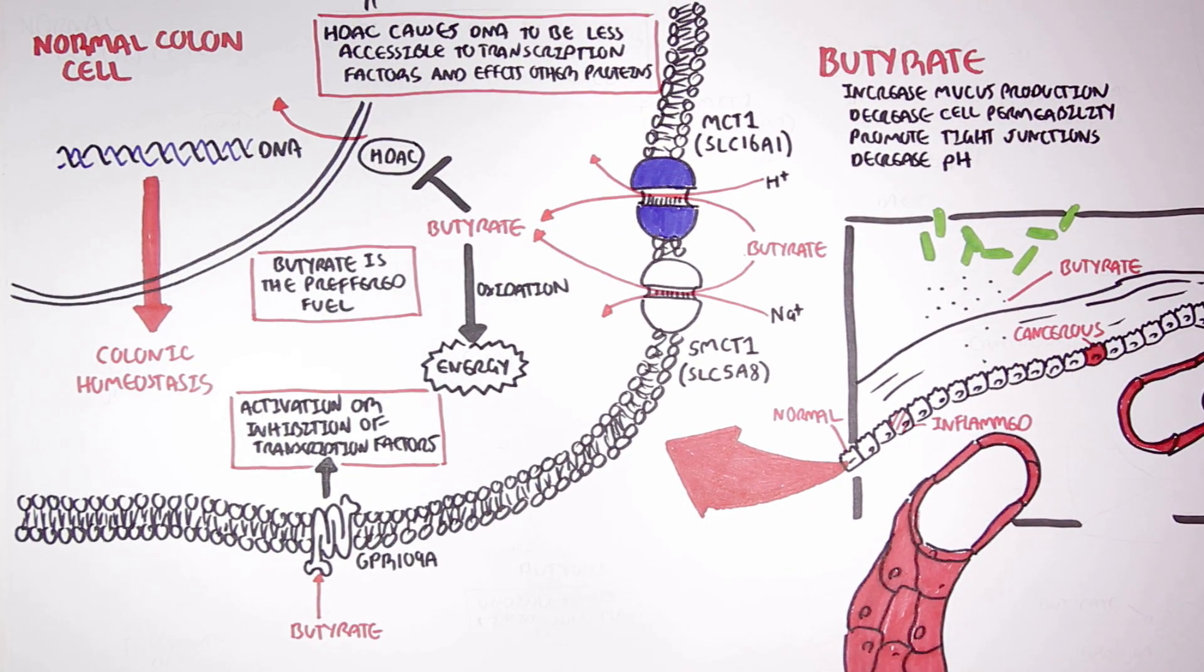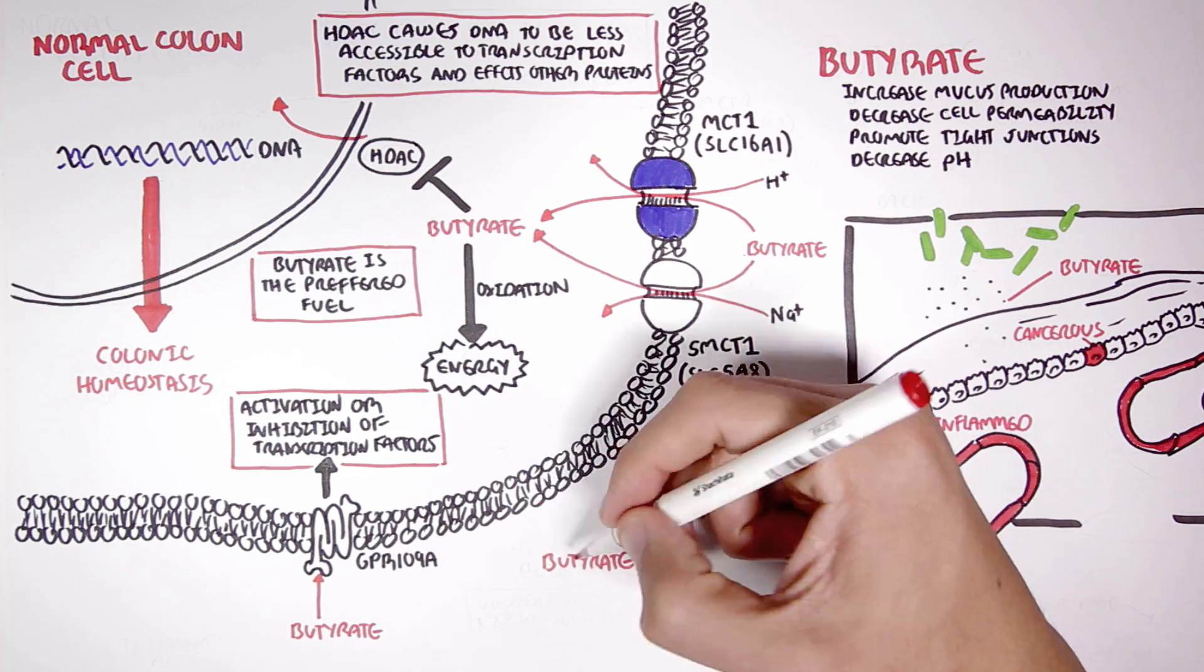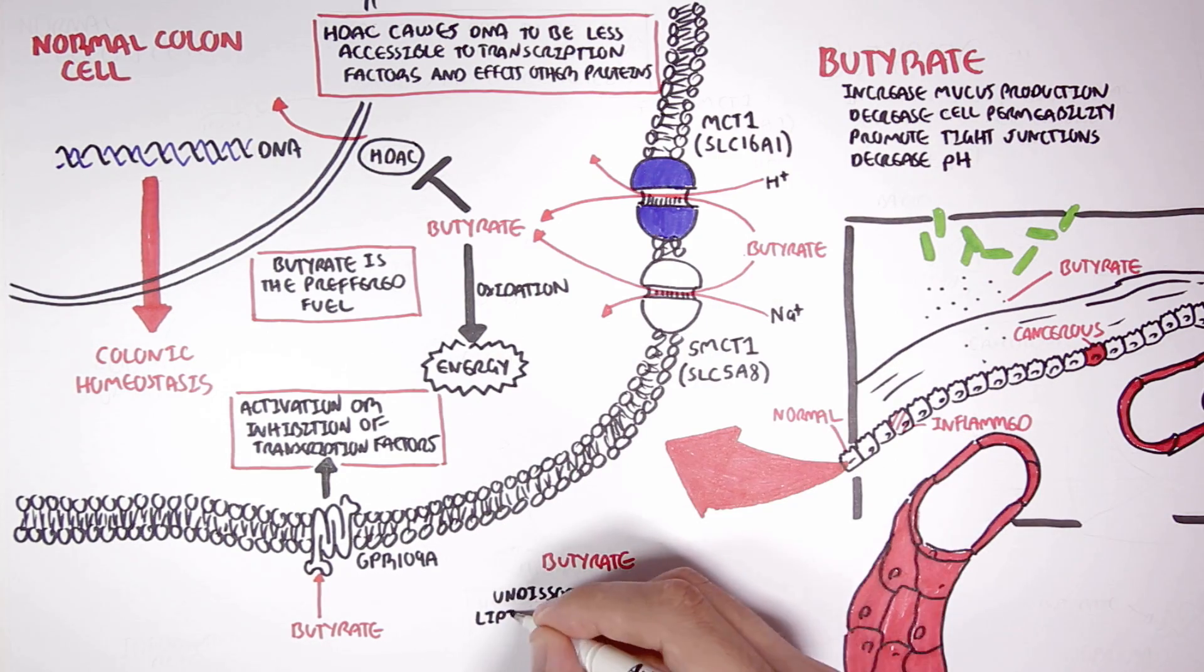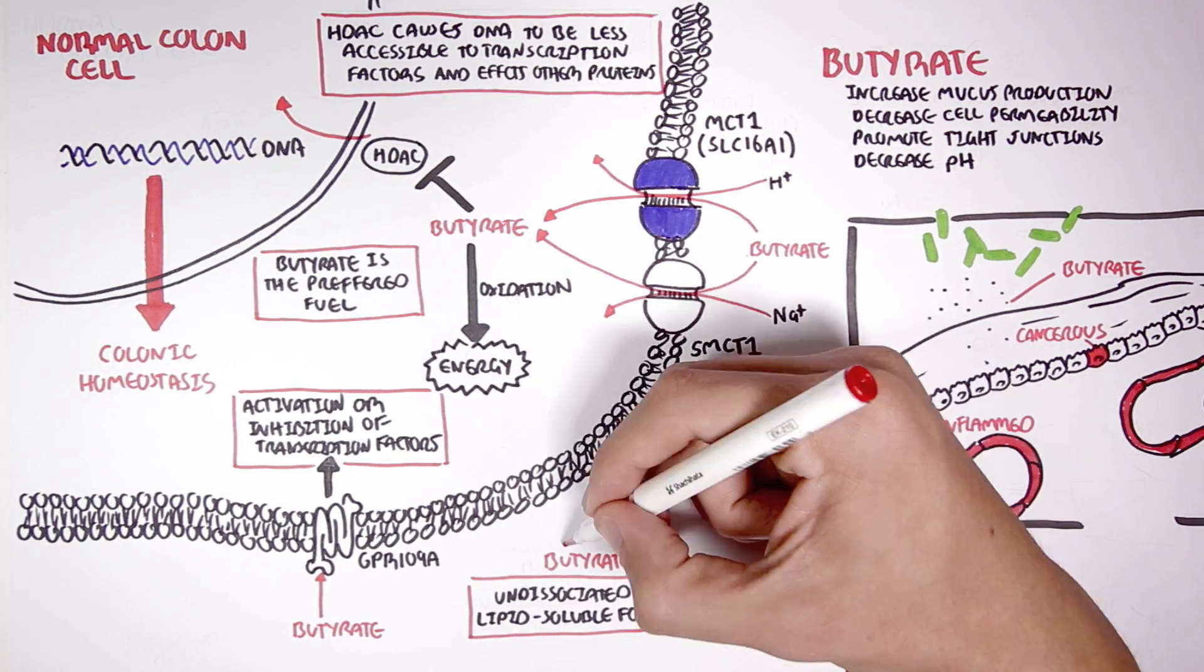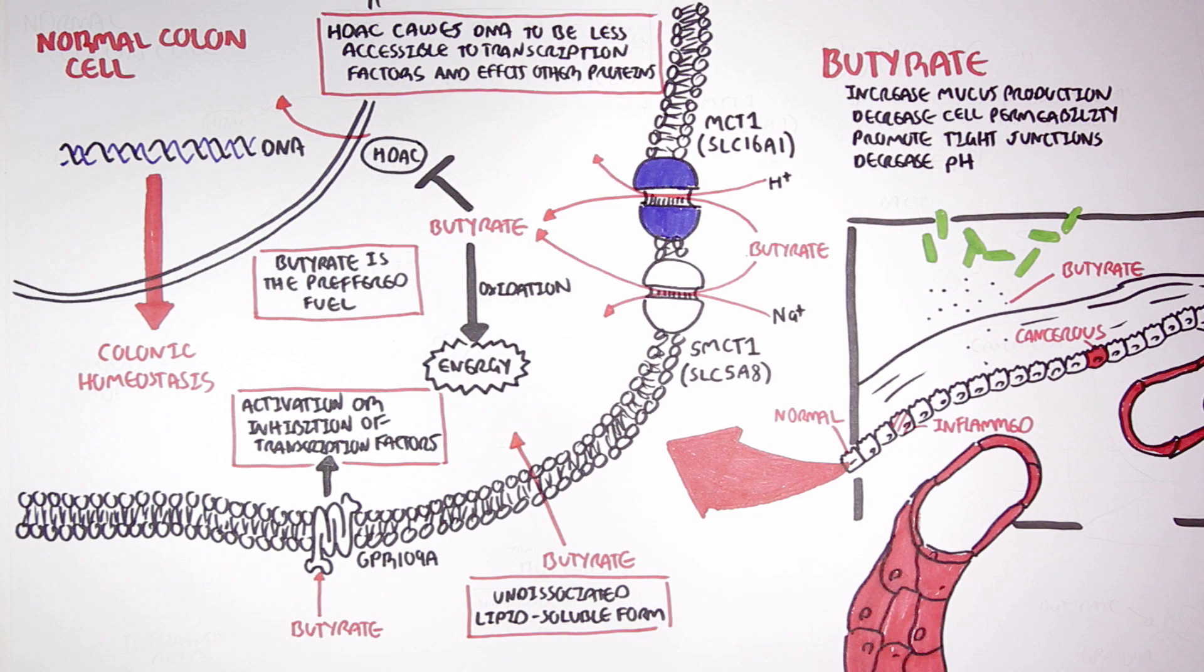Finally, if butyrate is in an undissociated form, which is a lipid-soluble form, it can enter the cell by diffusion through the plasma membranes without receptors or transporters.